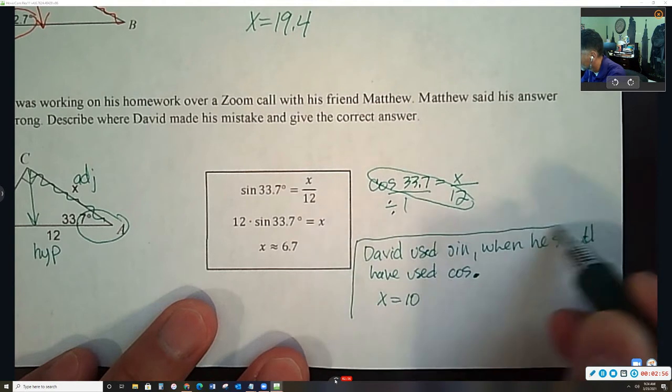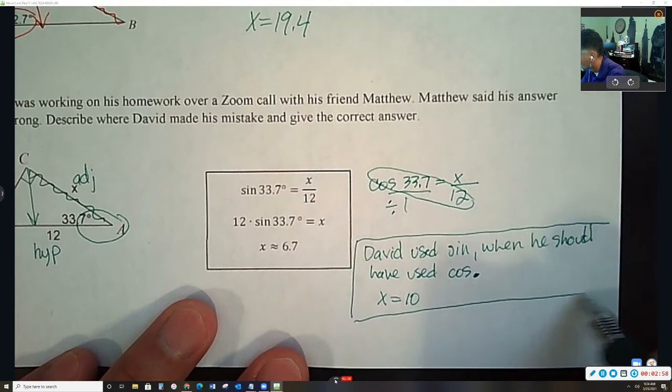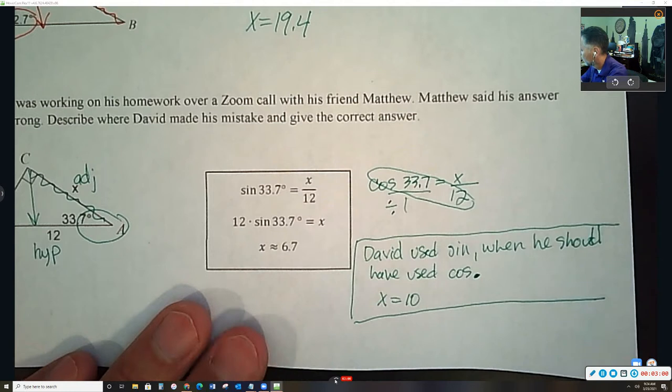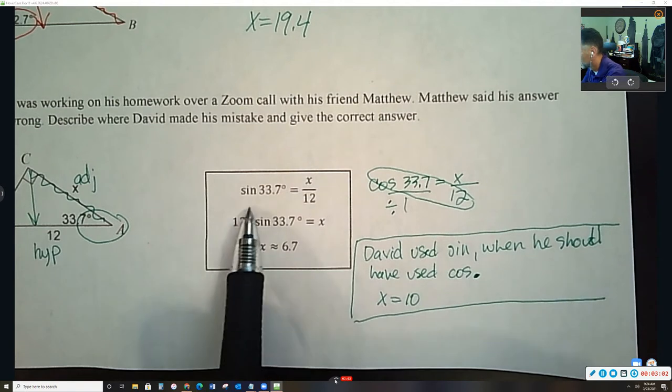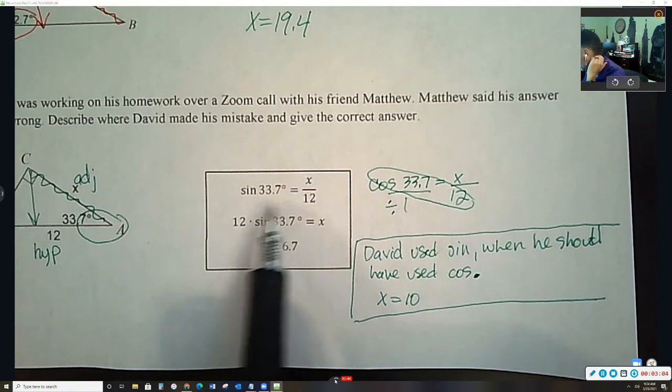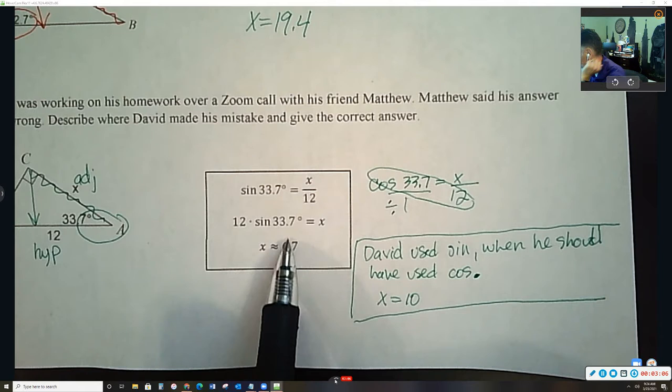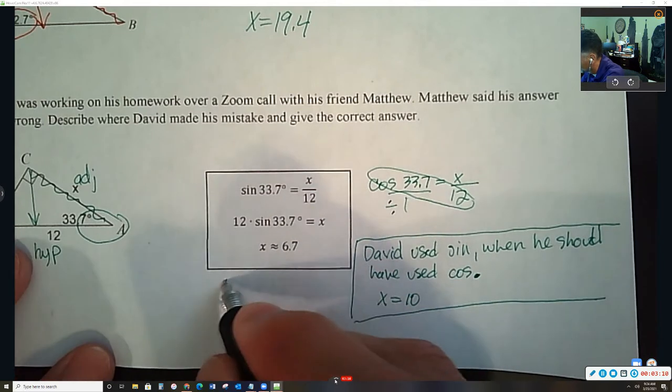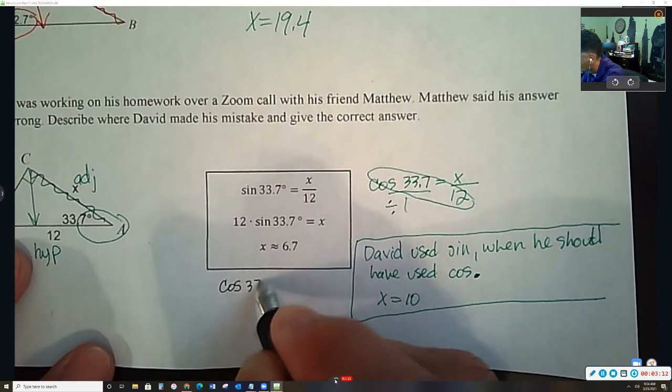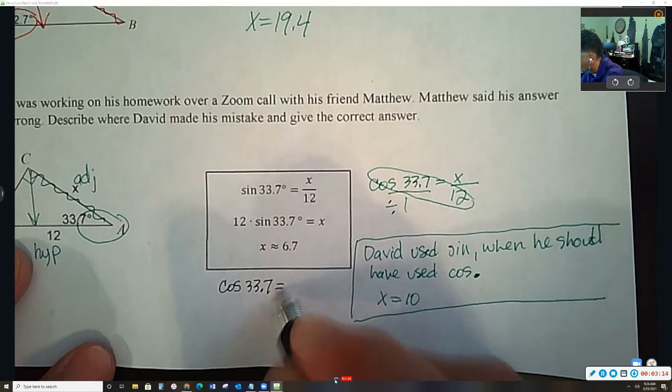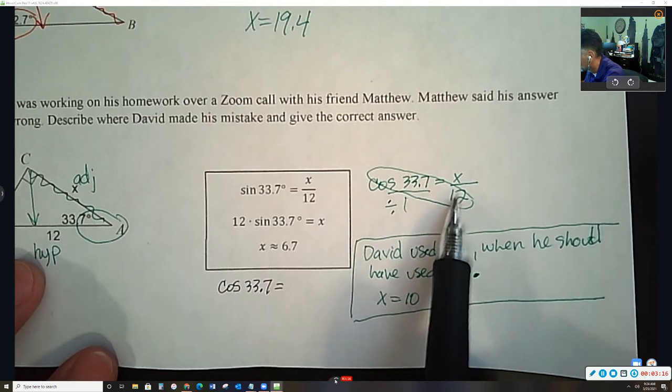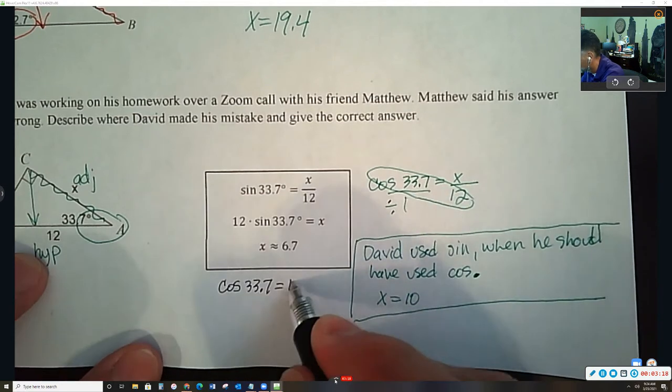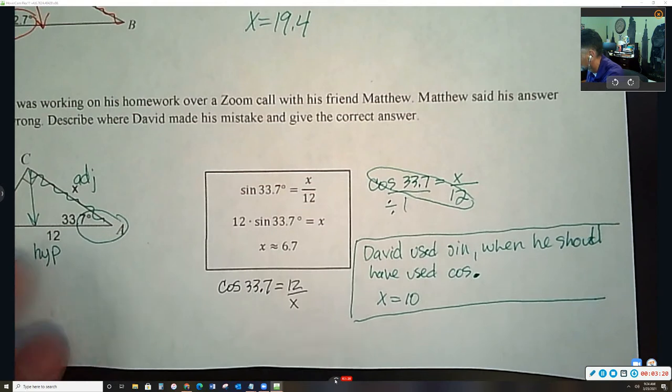So all of this should be your answer. Now be careful though, because it's not just that easy. There may be other mistakes in here. Like let's say David did use cosine. Here's another mistake David could have made. Instead of writing it as x over 12, maybe David would have wrote 12 over x. This would also give you the wrong answer.